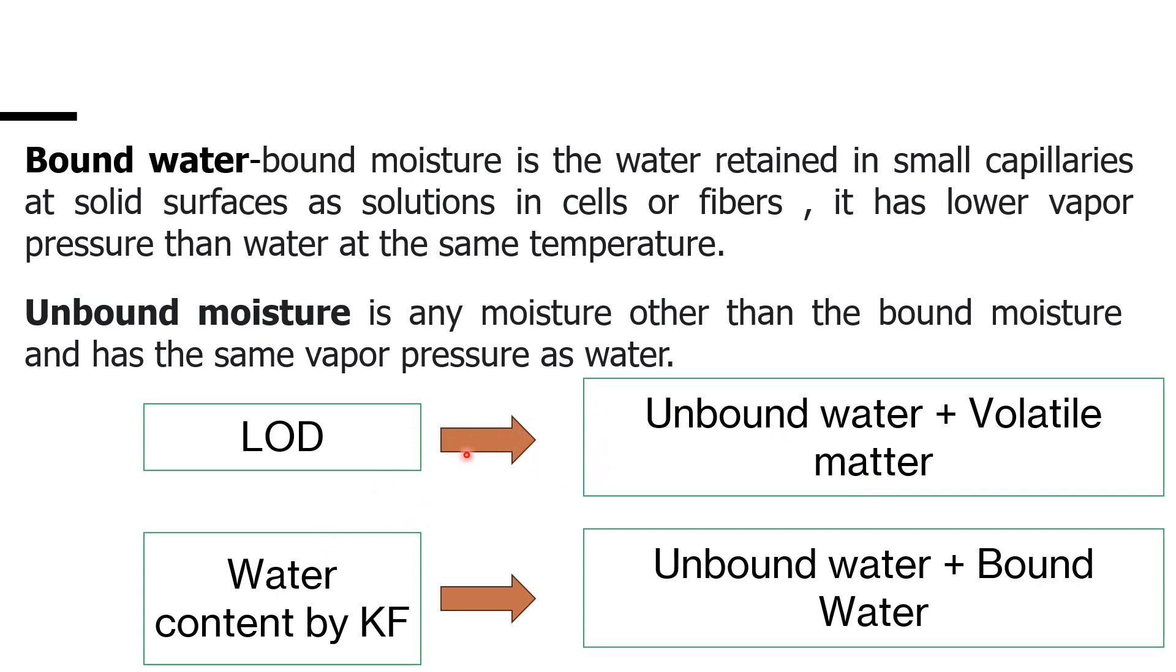Unbound water is any moisture other than the bound moisture and has the same vapor pressure as water. Bound moisture is the water which is bound to the capillaries or fibers of the material. So bound water we will not get in the LOD.